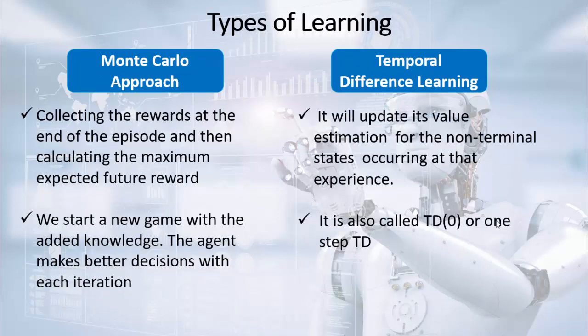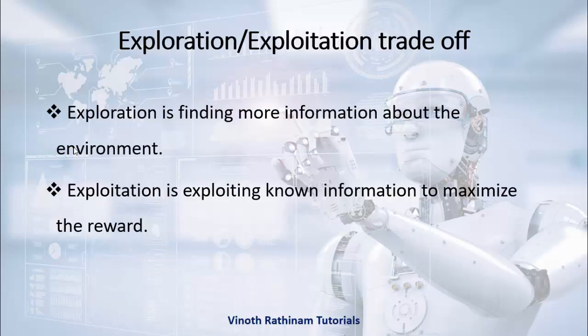Reinforcement learning can be categorized into two types of learning. One is the Monte Carlo approach, another is temporal difference learning. In the Monte Carlo approach, it collects the rewards at the end of the episode, then calculates the maximum expected future reward. When we start a new game with the added knowledge, the agent makes better decisions with each iteration — meaning the knowledge accumulates again and again. In temporal difference learning, it updates its estimation at every step; it won't wait until the game or episode is complete. For each step — like step 1, step 2, step 3 in chess — the estimation happens at every step.